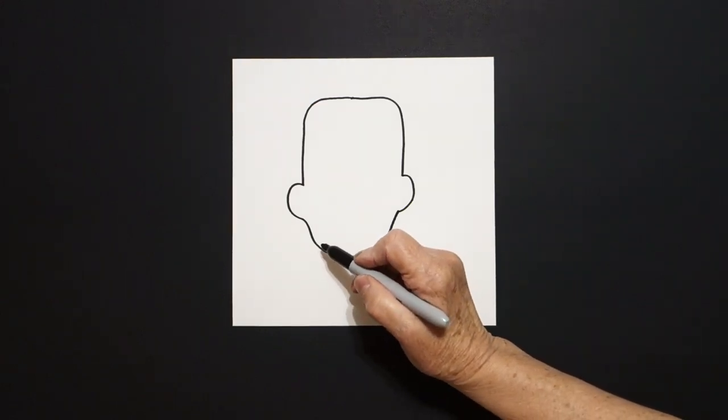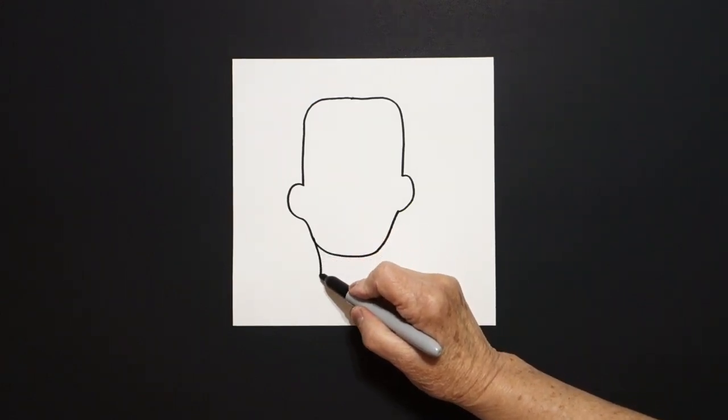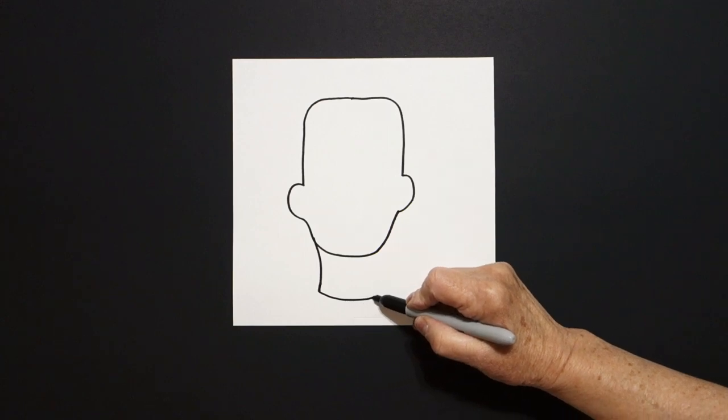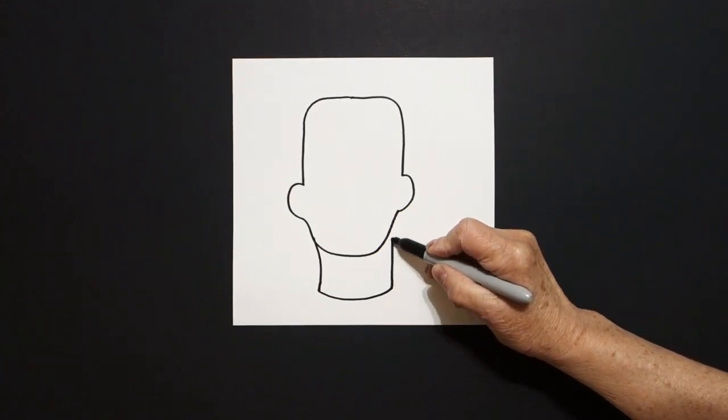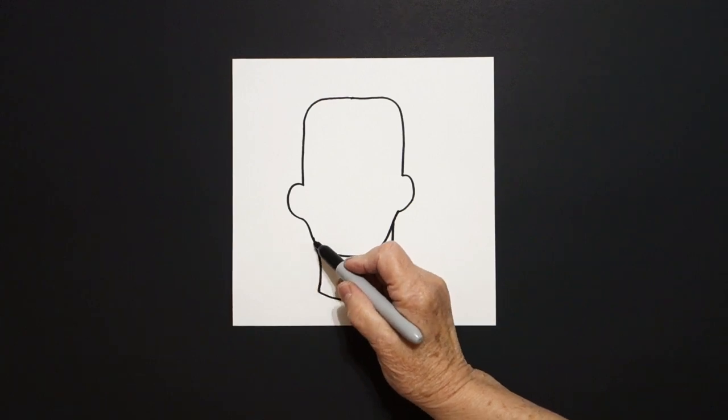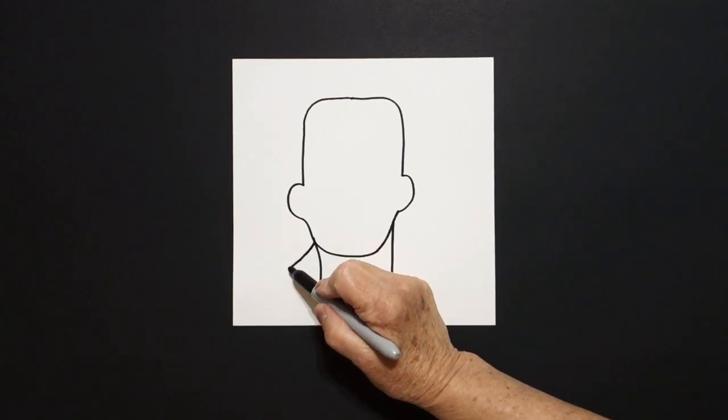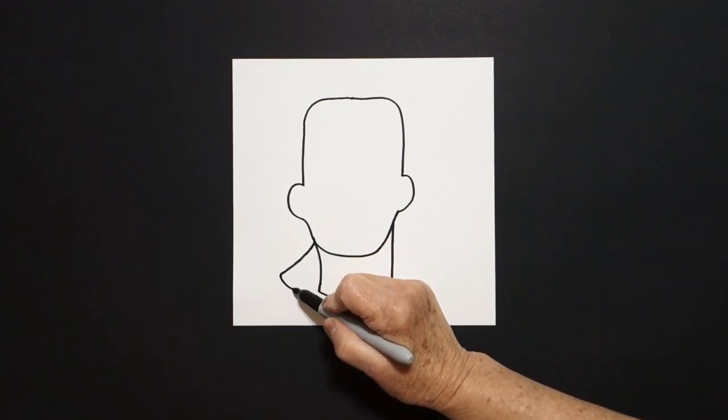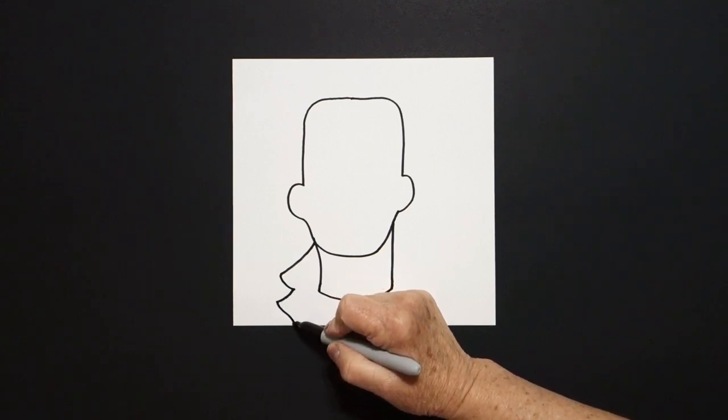I come over here to the left and I draw a slightly curve line down, curve line over, curve line up, connect. Starting right here, I'm going to draw a slightly curve line out, in, down, off the page.